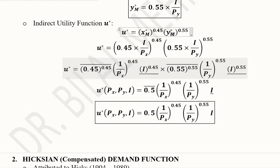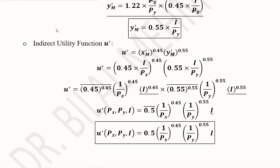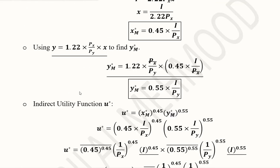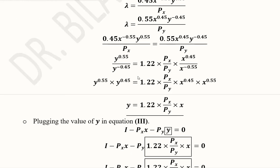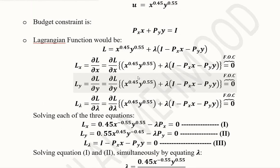The price terms PX and PY are then rearranged in a solid form: the coefficient term, the PX term, the PY term, and the budget term. In this way we have developed the indirect utility function, which shows the maximized utility obtained by consuming X asterisk M and Y asterisk M — the Marshallian demand quantities.